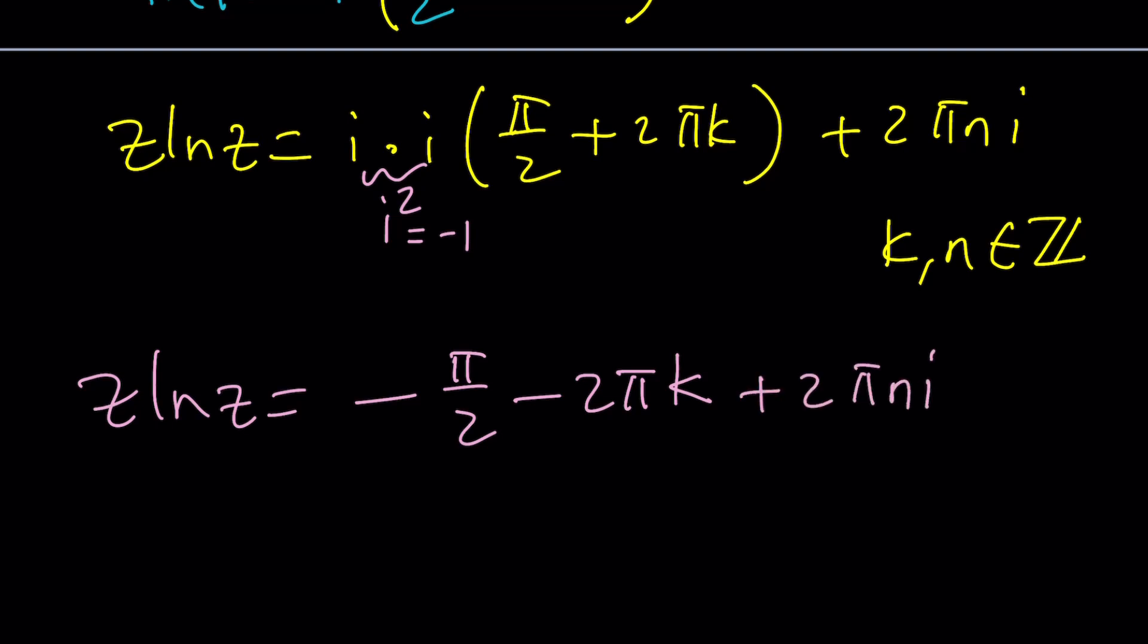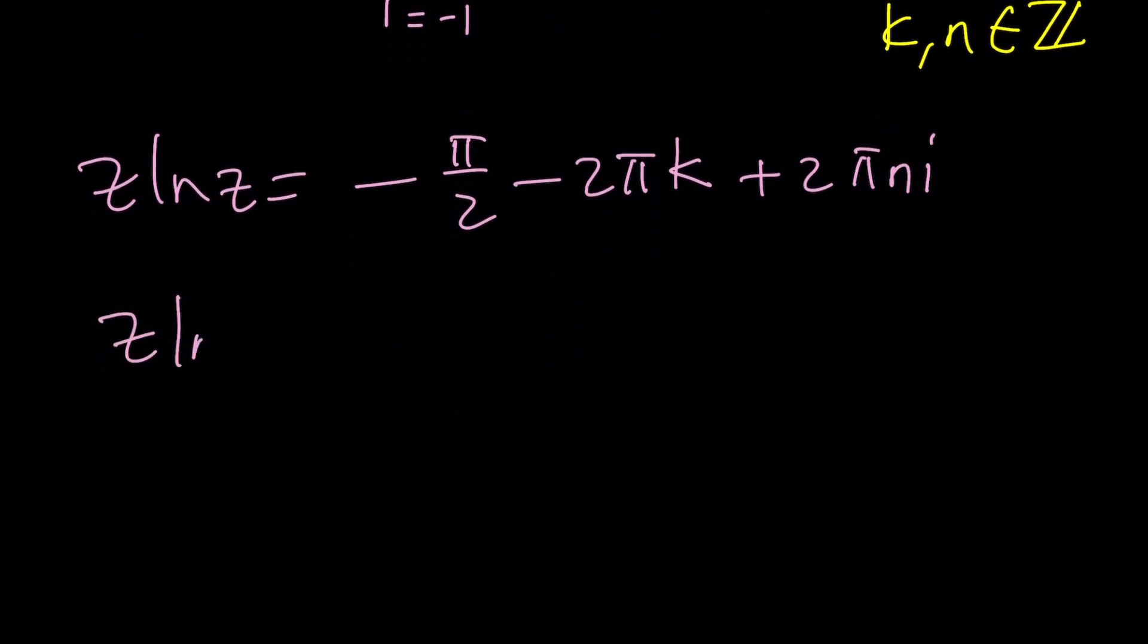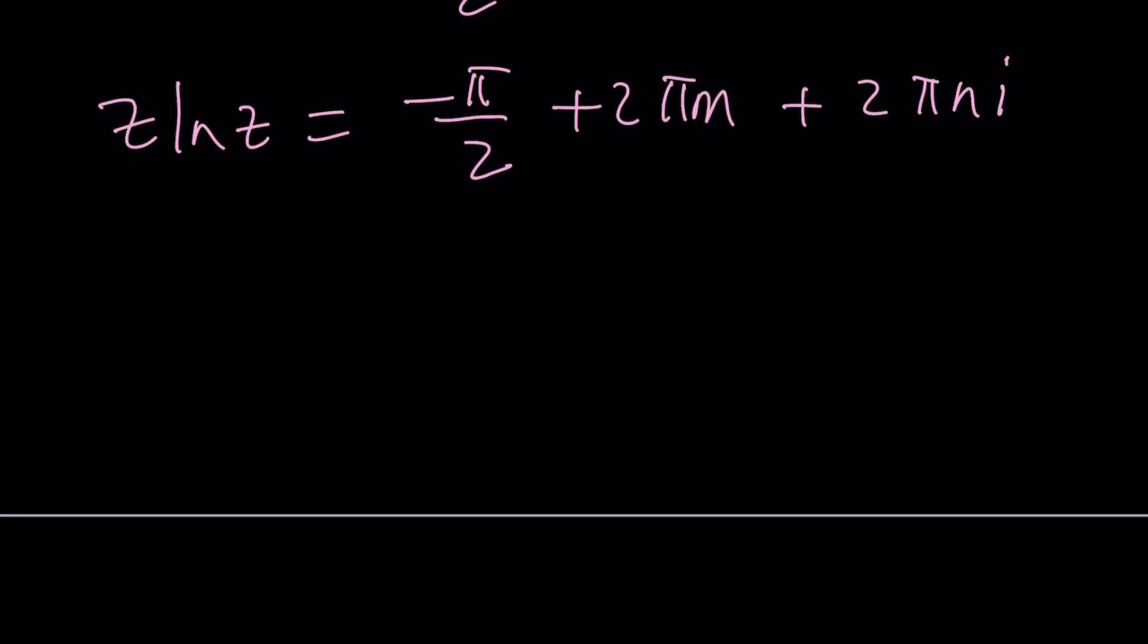So the multiples of 2 pi are being used differently here because we have an imaginary part. But subtracting 2 pi k, multiples of 2 pi, is the same thing as adding. So I could probably turn this into negative pi over 2 plus 2 pi m plus 2 pi n i. Million dollar question. How do you solve for z? Let's go ahead and take a look at the complicated case.